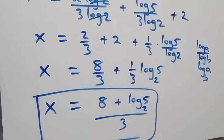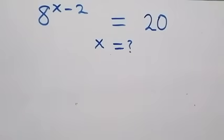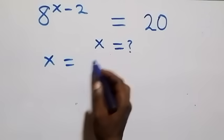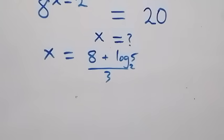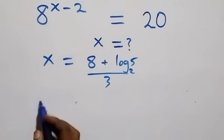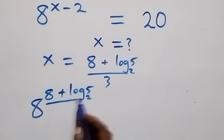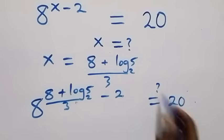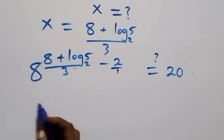So the answer is x equals 8 plus log 5 base 2, all over 3. Now let's check if this satisfies the given problem. We substitute x equals (8 plus log₂5) / 3 into the equation, giving 8 raised to the power of (8 plus log₂5)/3, minus 2.